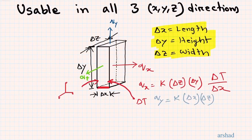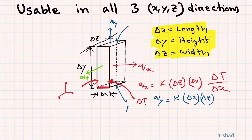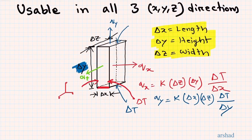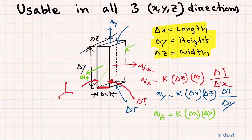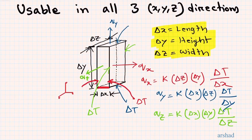Similarly, Q_Y equals K times Delta X times Delta Z (the cross-sectional area marked in blue) times Delta T_Y divided by Delta Y. For the Z direction, the cross-sectional area is Delta X times Delta Y (marked in green), and we use the temperature difference Delta T_Z divided by Delta Z.